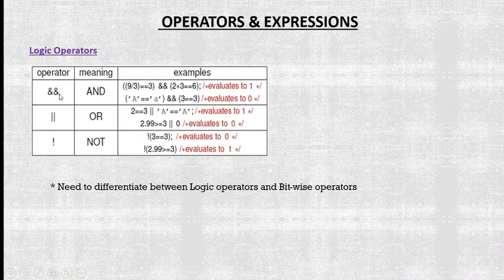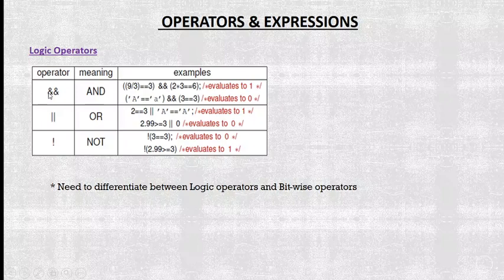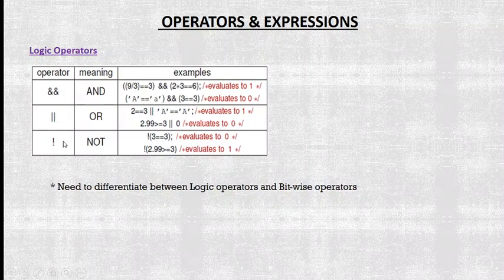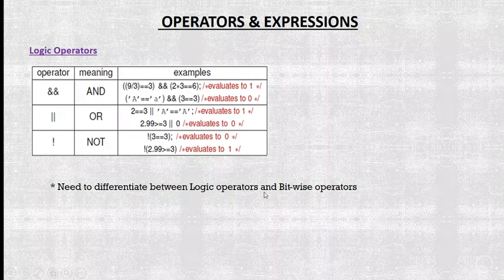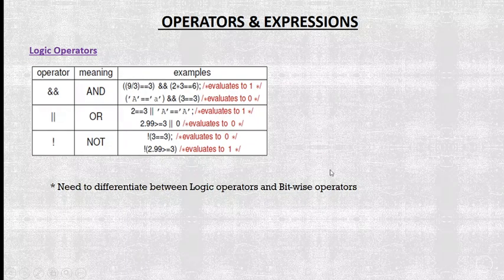We also have logical operators. The logical AND uses two ampersands (&&), logical OR uses two pipes (||), and logical NOT uses the exclamation mark (!). We need to differentiate between logical operators and bitwise operators. Logical operators work on conditions — for example, if you have one condition AND another condition, you use the logical operator.